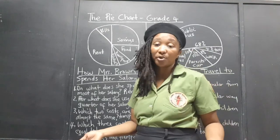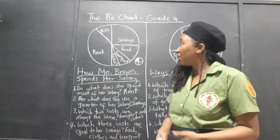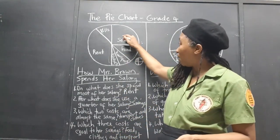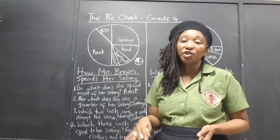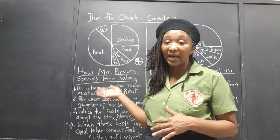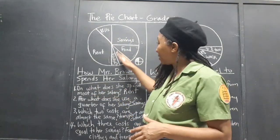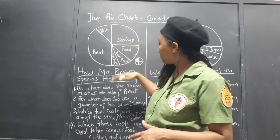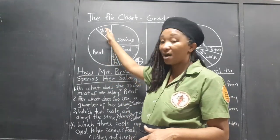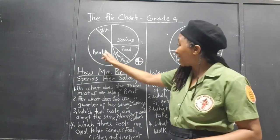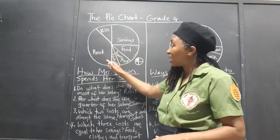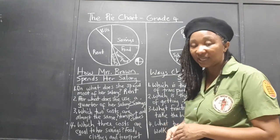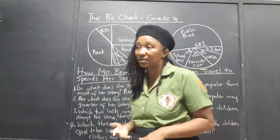Even though we were not given any numbers — we weren't even told what her total salary was or any amounts for these costs — just by working with fractions, a fraction of the pie, we could answer all the questions. We can estimate the rent is almost a half, and the rent and the bills together take up a half of her salary. That's a lot of your salary for rent and bills.